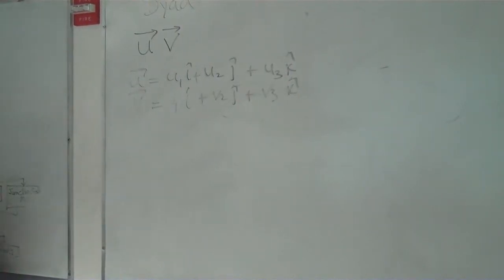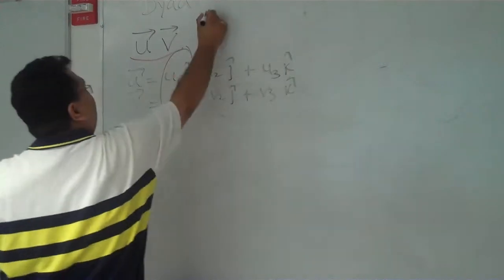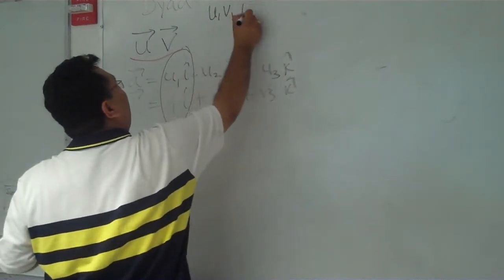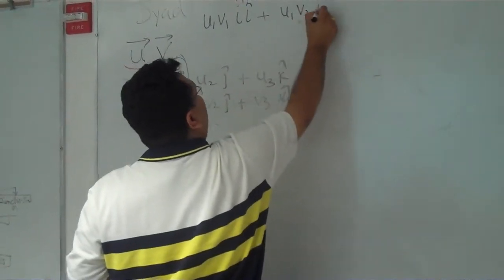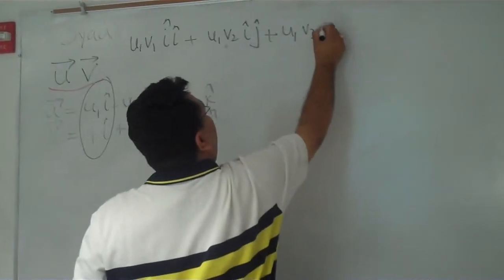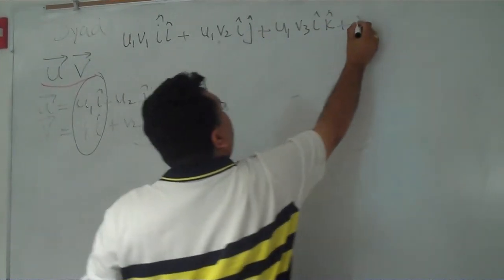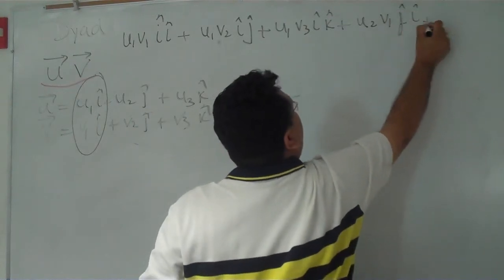If I put both together, what will be the components? If I keep them together, the components will start like u1 v1 i i plus u1 v2 i j plus u1 v3 i k, u2 v1 j i, so on.